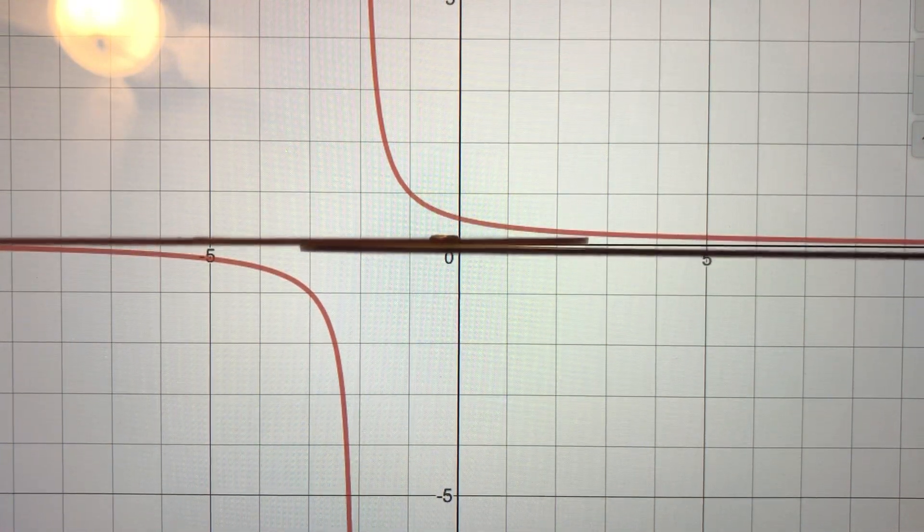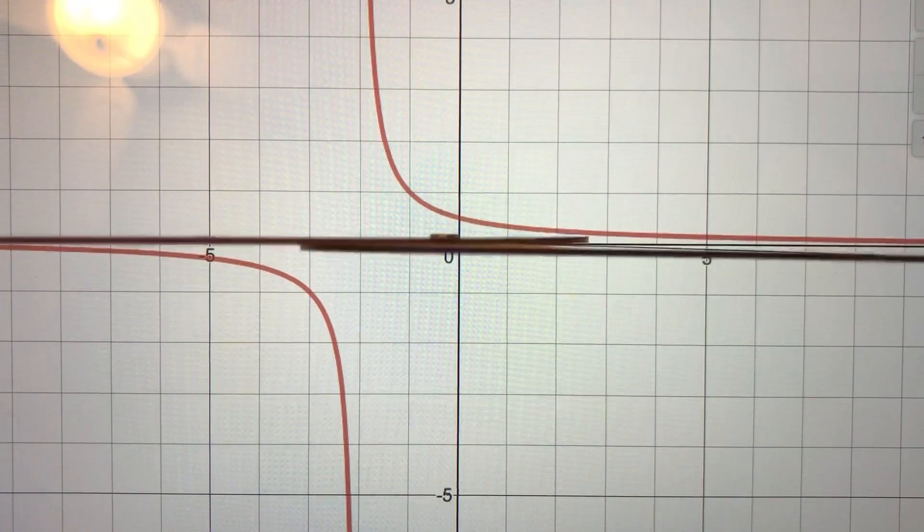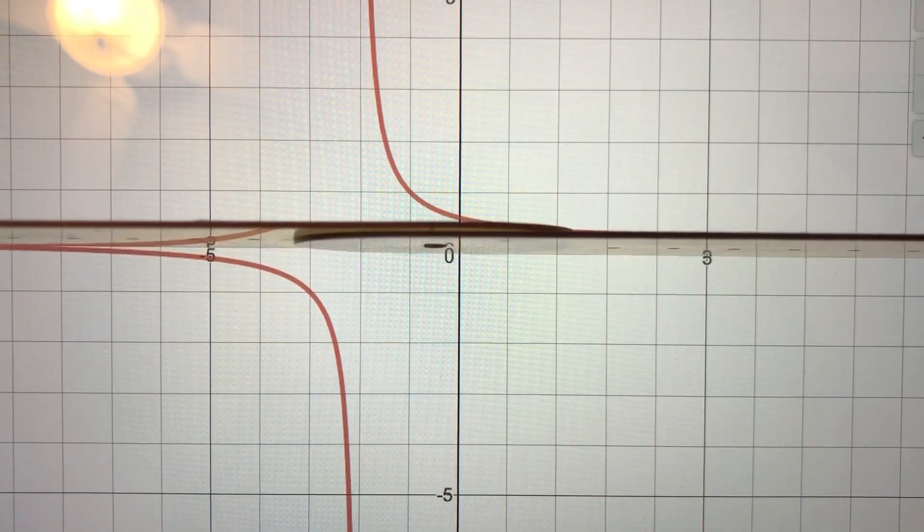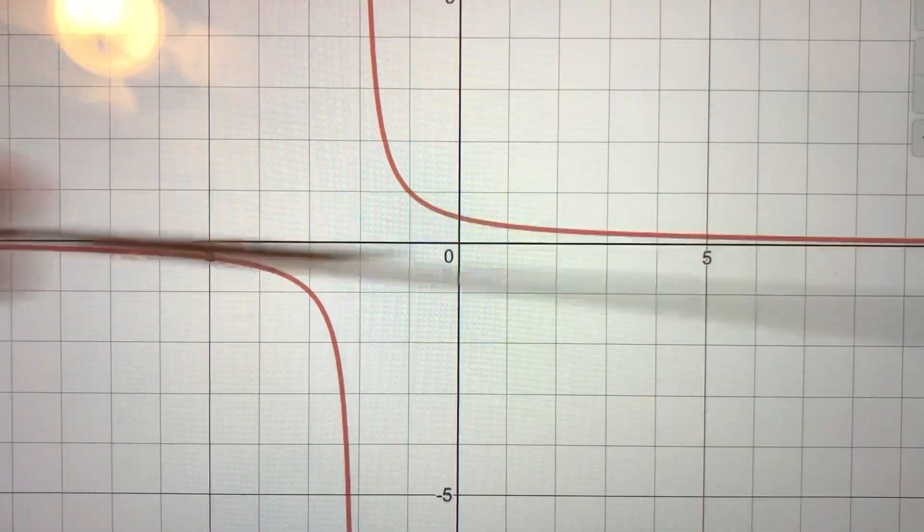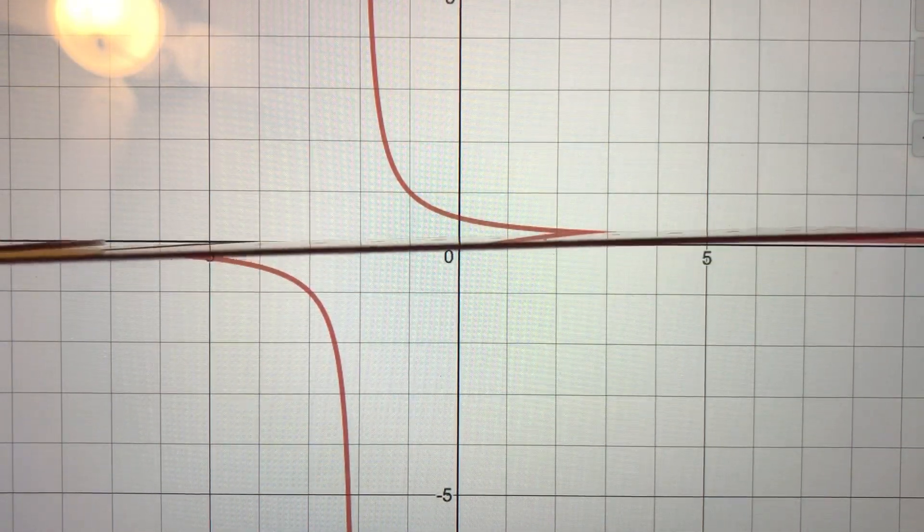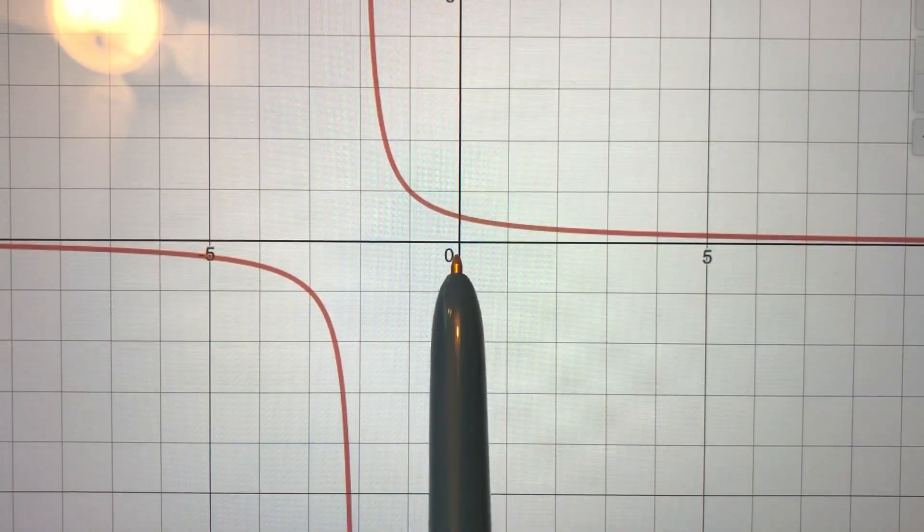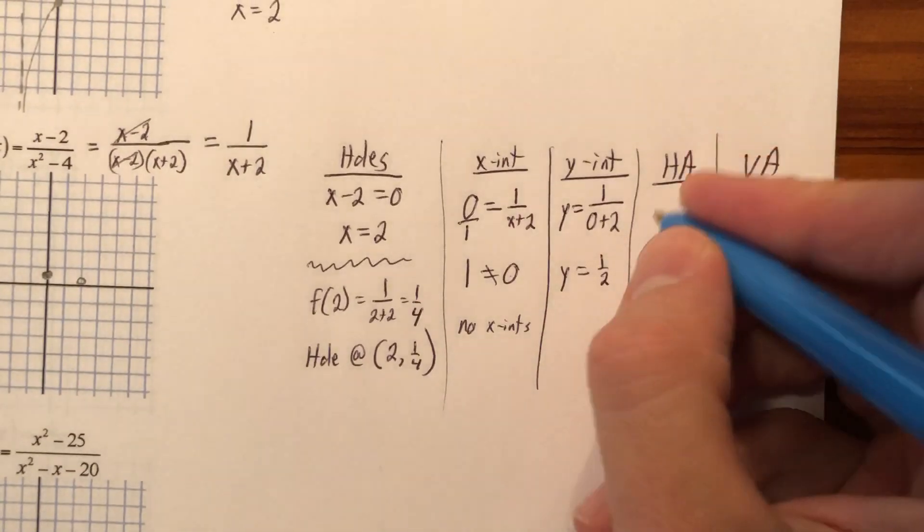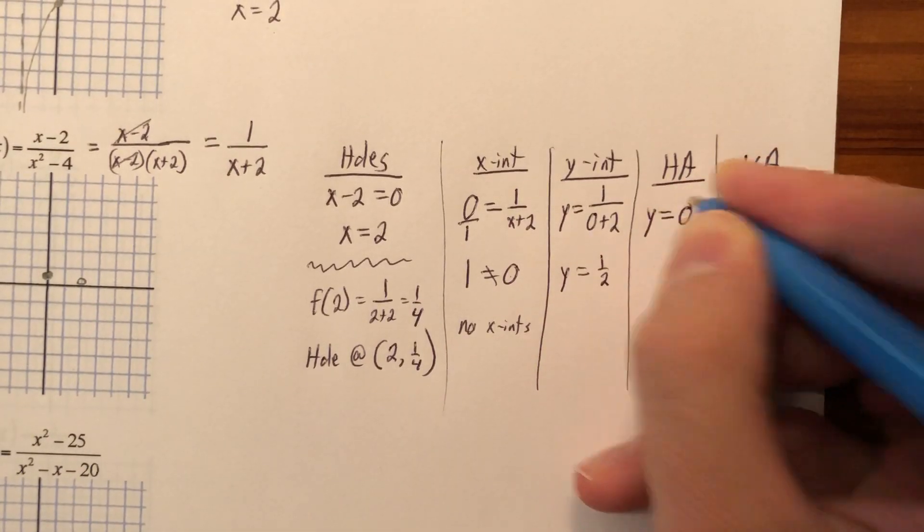Now you might look at that and say, well, that's the x-axis. I agree. So you could say the horizontal asymptote is the x-axis. It's fantastic. But what's the equation of this? In other words, if I was to draw this line, what's the equation of this horizontal line? This horizontal line crosses the y-axis at zero. So the horizontal asymptote is zero.